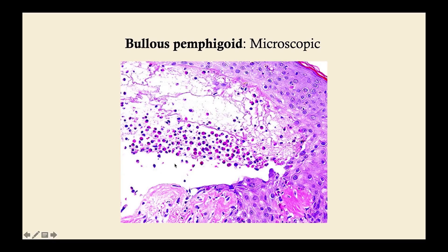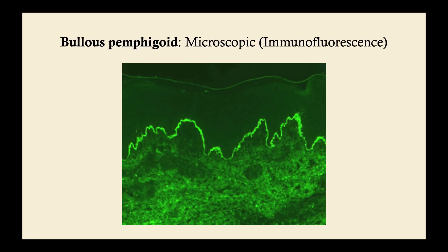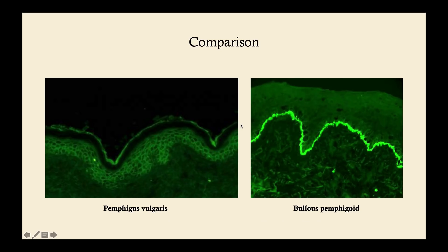On immunofluorescence, it will also reveal IgG and C3 deposits; however, you'll see a very narrow, linear pattern at the epidermal aspect of the basement membrane — just a thin line, not fishnetting. The entire epidermis is intact. In contrast, pemphigus vulgaris shows fishnetting because the antibodies are in and around the keratinocytes, whereas in bullous pemphigoid you only see staining at the basement membrane.